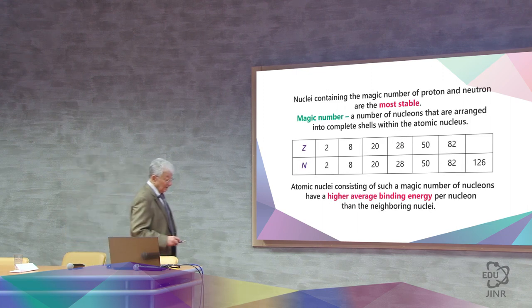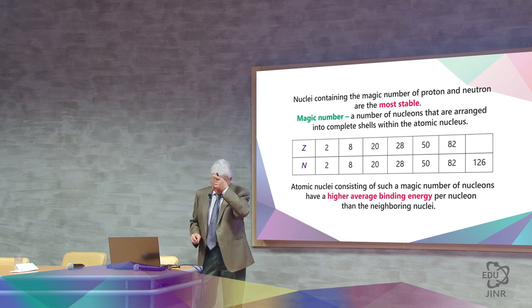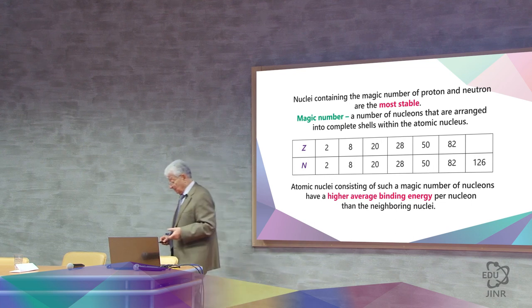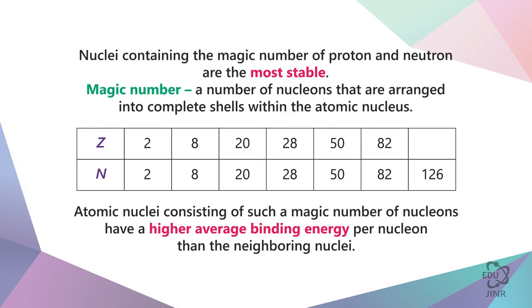So, there are nuclei that are stable, as I showed you, and they are more stable than the drop model predicted. Physicists love beautiful names, and they call them magic. There are nuclei that have such a number of protons and neutrons that the binding energy of these protons and neutrons is greater than that of neighboring nuclei. This nucleus, which has this number of protons or this number of neutrons, is called magic. And the magic effect itself is called the shell effect.